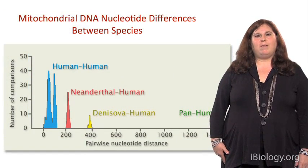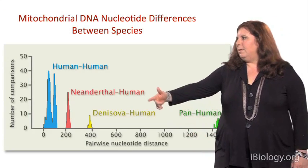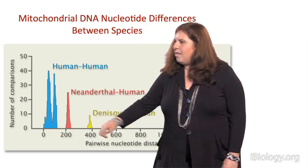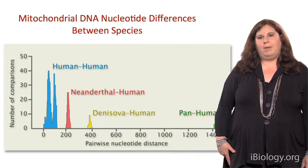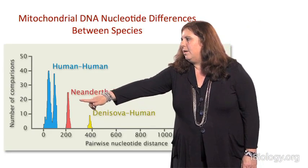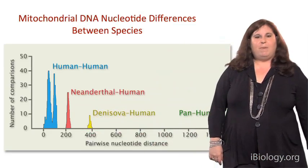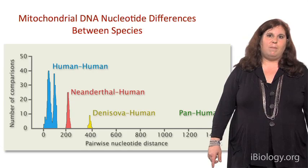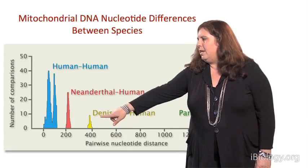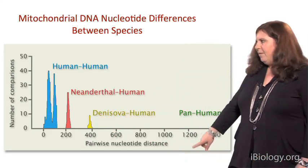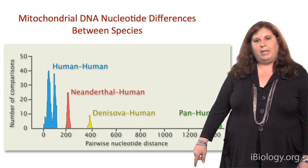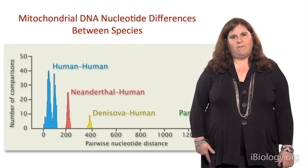If we compare pairwise nucleotide diversity among anatomically modern humans, shown in blue, there's not a lot of diversity, as expected, given that we all have a very recent common ancestry. Comparing modern human mitochondrial DNA genomes to Neanderthal shows they are more divergent, given that the mitochondrial DNA lineage diverged about 500,000 years ago. Comparing to the Denisovan mitochondrial DNA lineage, they're even more divergent. And comparing to chimpanzee, given that they diverged at least five million years ago, they are the most different in terms of sequence variation.